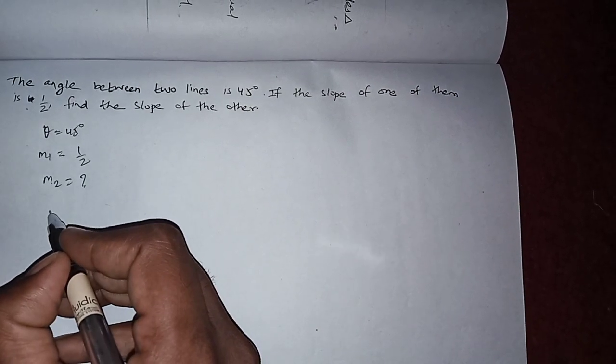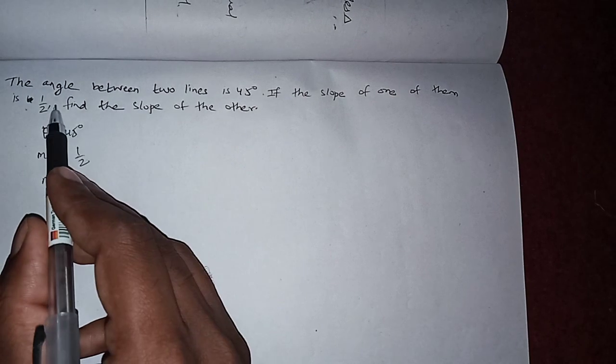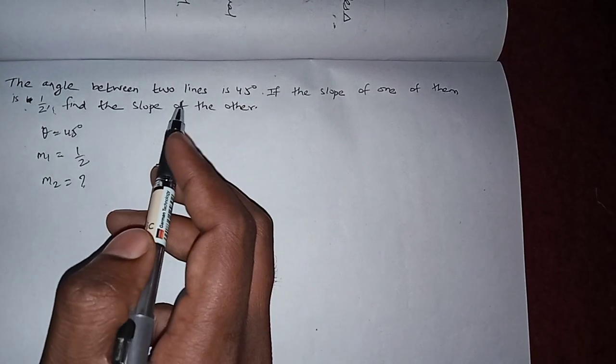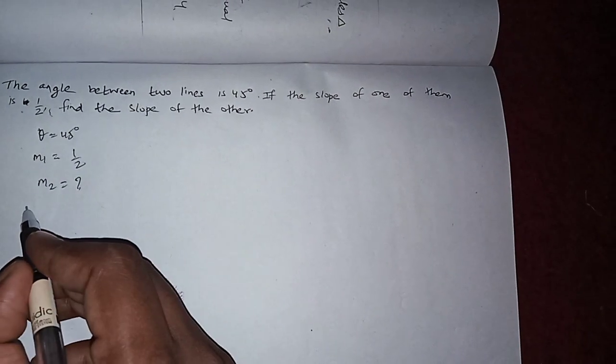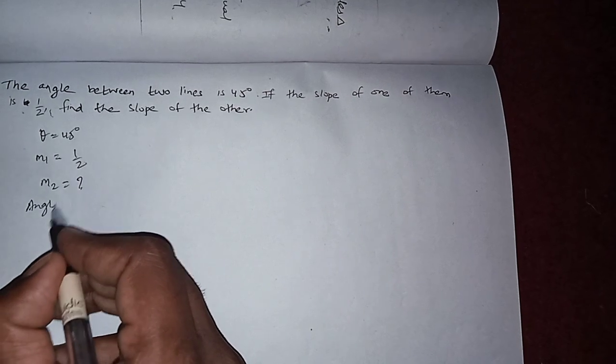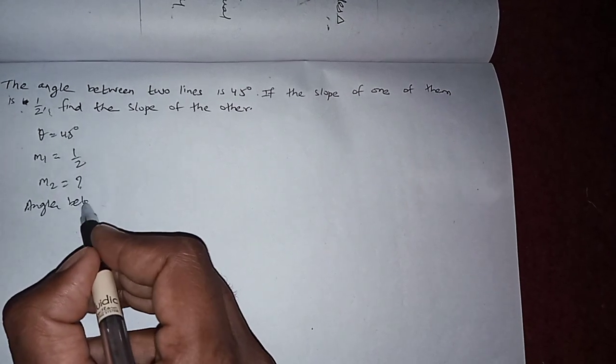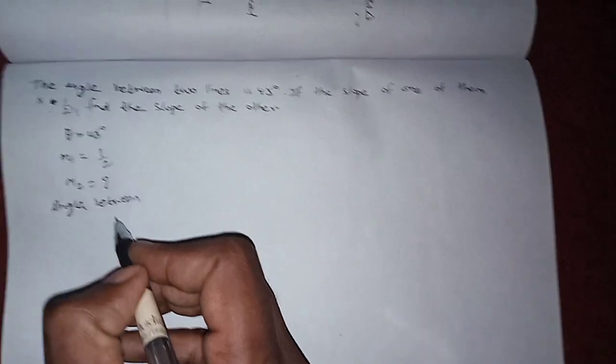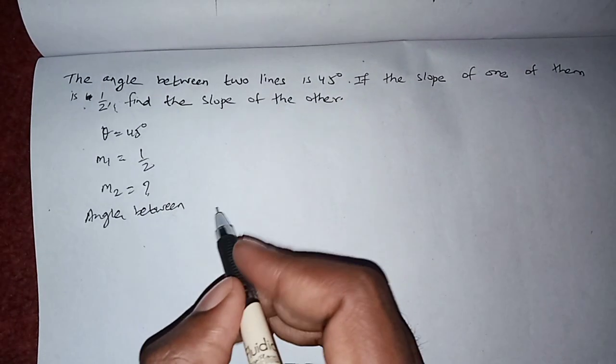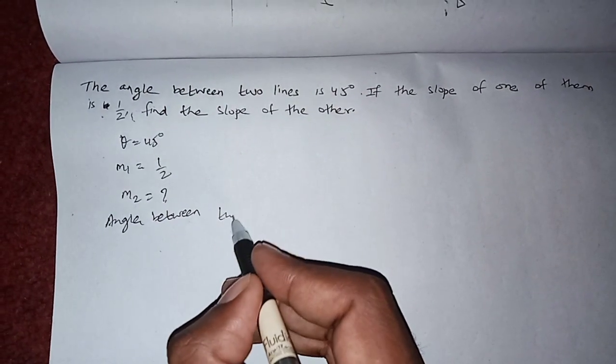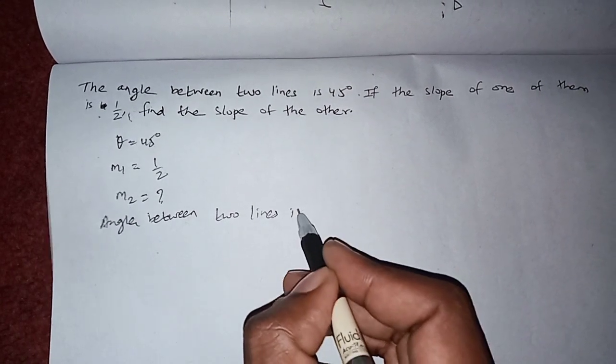So we will use the formula of angle between two lines. Angle between two lines is tan θ equals plus minus (m1 minus m2) divided by (1 plus m1 dot m2).